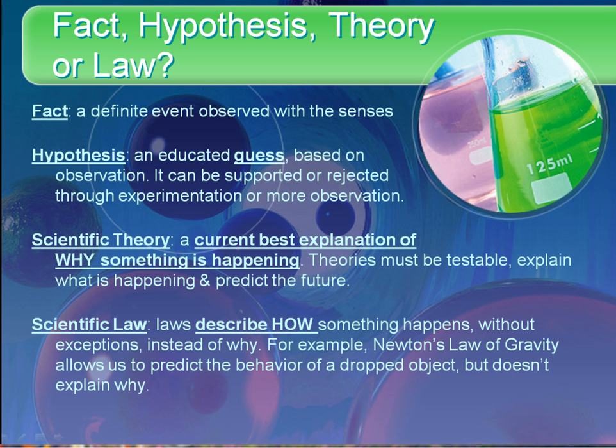Some definitions. A fact is a definite event you've observed with the senses — either your natural five senses or using some sort of instrument. A hypothesis is an educated guess. A theory is our current best explanation of why something has happened — it's a hypothesis that has grown up and gotten plenty of evidence to back it up, which is why it's now called a theory. A scientific law describes how something happens and is often mathematical. For instance, Newton's law of gravity allows us to predict the behavior of a dropped object, but it doesn't explain why gravity works.